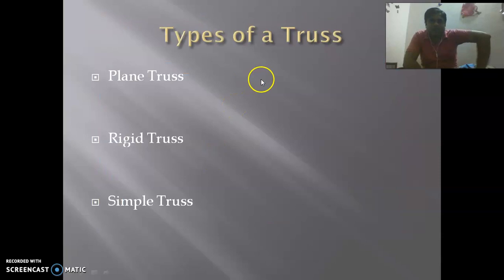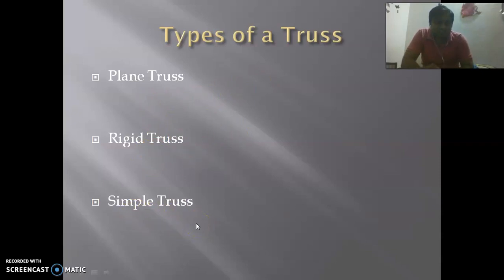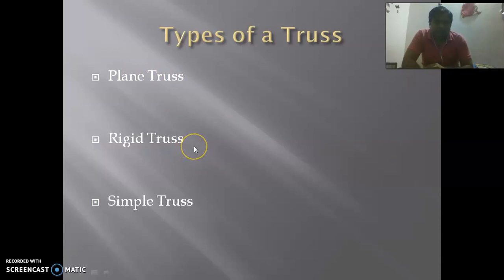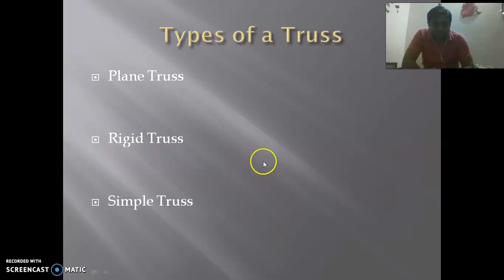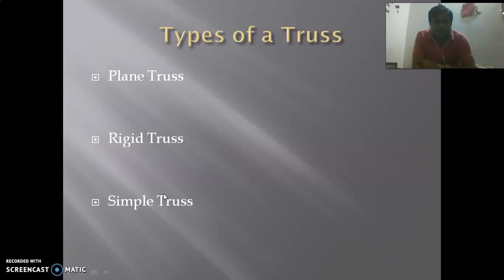We have three types of truss: plane truss, rigid truss, and simple truss. If all members of the truss essentially lie in a single plane, it is called a plane truss. If the truss does not collapse when loaded, it is called a rigid truss — deformation between members is negligible in a rigid truss. For simple truss, the basic element of a plane truss is a triangle, and a structure built from the basic triangle by adding different members is called a simple truss.